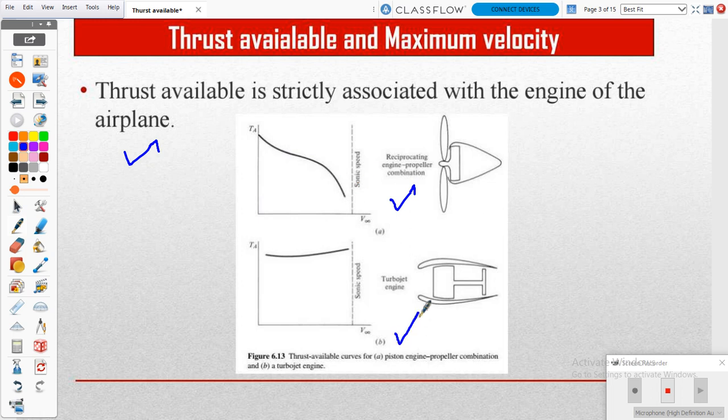For a jet engine - turbojet engine - thrust available will be high at low speed. After we increase the velocity, thrust available also starts to increase in smaller quantity.